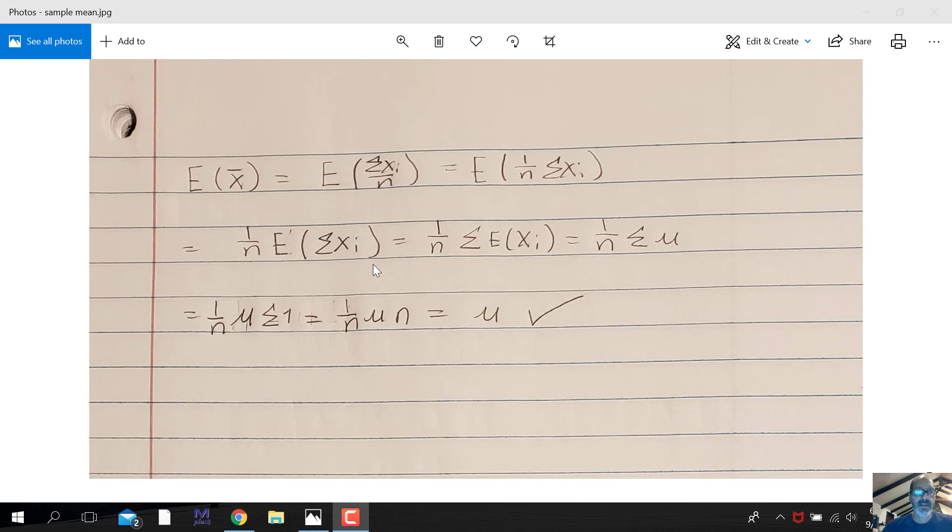So we also know that the expected value of a sum is the sum of the expected values. That's something you can see a proof for yourself if you're interested. And so we rewrite that, and just rearrange this equation.